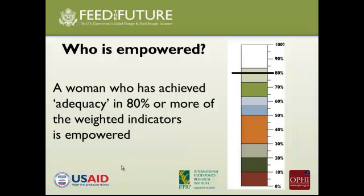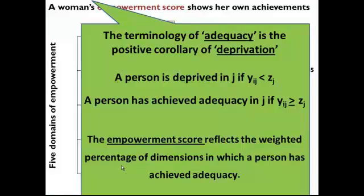Having created empowerment scores for each person, how do we know if they have achieved adequacy? The cutoff is that they must have adequacy in 80% or more of the weighted indicators. Adequacy is the word we use as the opposite of deprivation. A person is deprived in dimension J if their score in J is strictly less than the deprivation cutoff, and has adequacy in J if their score is greater than or equal to the cutoff. For each of the ten indicators, we have the cutoff Z-sub-J, and we evaluate women to obtain their empowerment score.